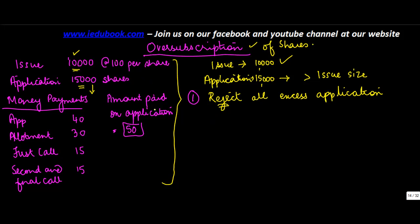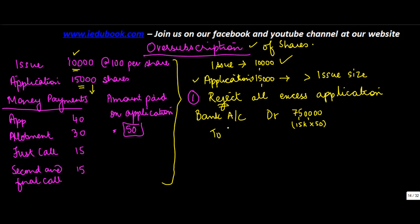Originally, when you received the applications, you would have made the following entry on receipt: Bank Account debit — you've got applications for 15,000 shares and each one has paid 50, so you received 7,50,000, which is 15,000 into 50. The credit goes to Share Application Account, because that is the account on which you received this money.